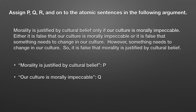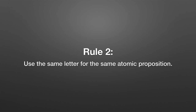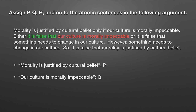Looking at the atomic proposition part: 'our culture is morally impeccable' should look really familiar — that's our assignment for Q. You might say you'd assign this R, but no. This brings us to our second rule: use the same letter for the same atomic proposition throughout the argument. So 'our culture is morally impeccable' still gets Q. Even though this is negated, the atomic proposition part is still assigned Q. This isn't a new atomic proposition — it's still the same one.